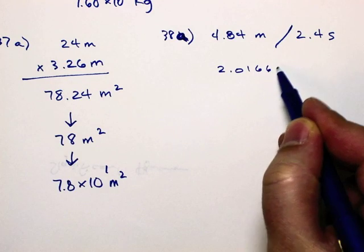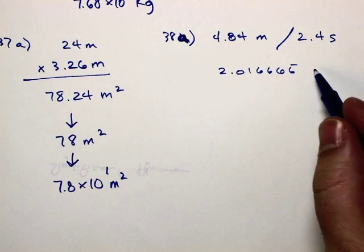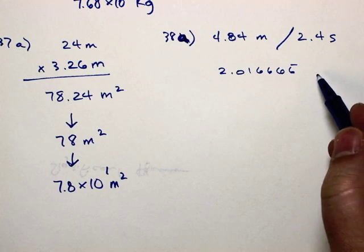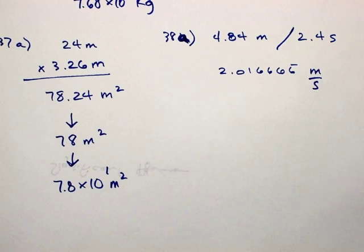My calculator is something like this. 2.016666 repeating forever. And then my unit on this. Meters over seconds. Yes. Meters over seconds. So, meters per second.